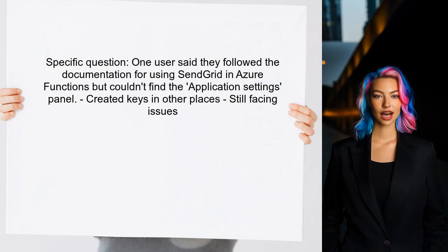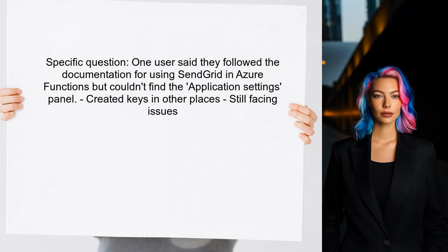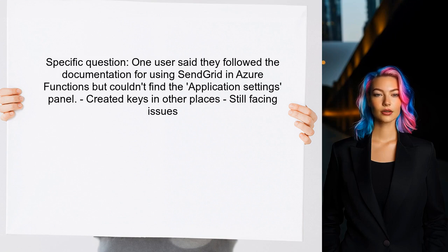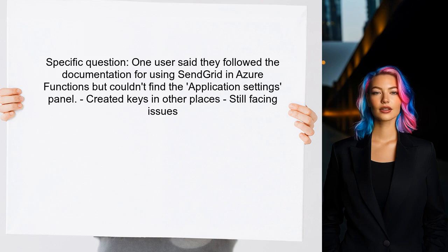Let's dive into the specific question at hand. One user reached out saying they followed the documentation for using SendGrid in Azure Functions, but couldn't find the application settings panel mentioned. They created keys in other places, but are still facing issues. Sound familiar? Let's explore this together.